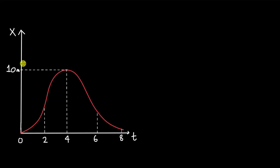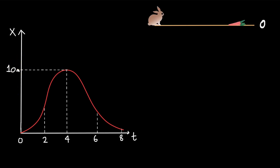Now we will take an example. Here we have a position-time graph with time instants at two, four, six, and eight seconds on the x-axis (time in seconds) and position in meters on the y-axis, with one value of position at 10 meters. We have a rabbit moving towards a carrot, and this graph describes the rabbit's motion. Let's figure out the instantaneous velocity at different time instants. At time zero, we draw a tangent to the curve at that time instant.